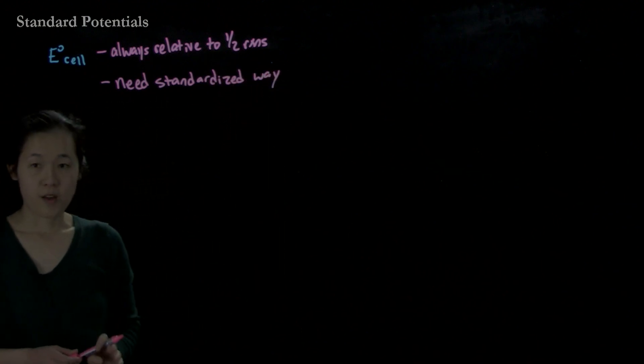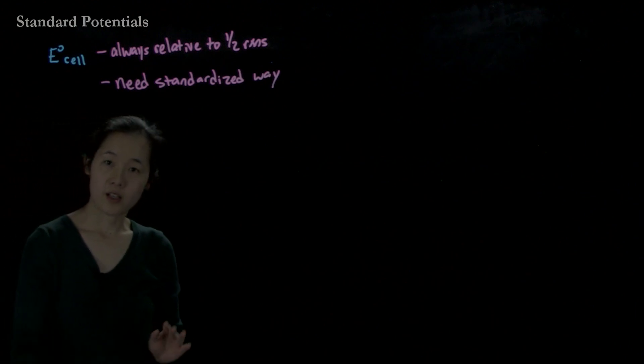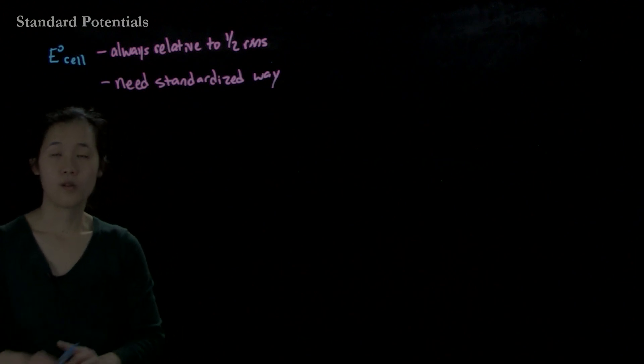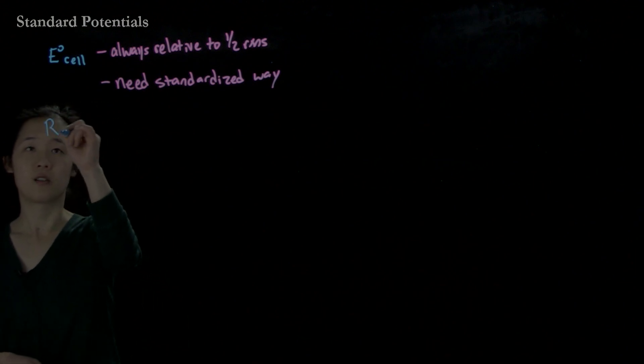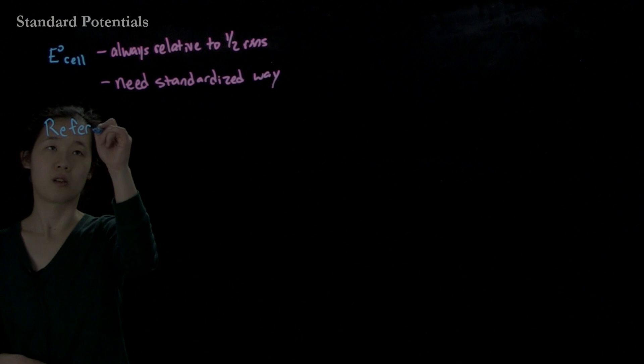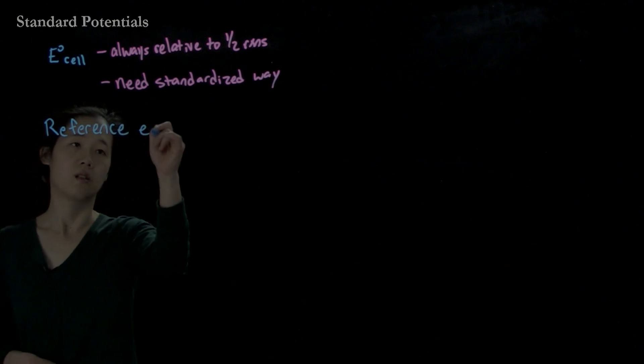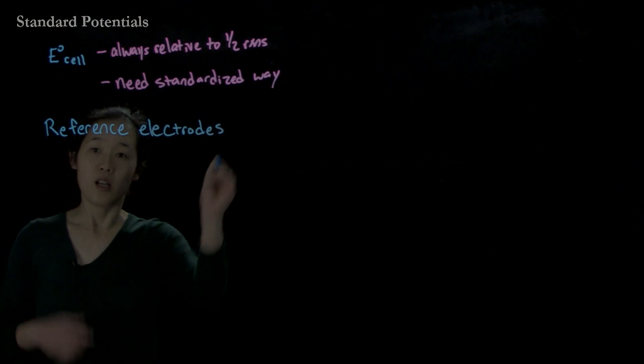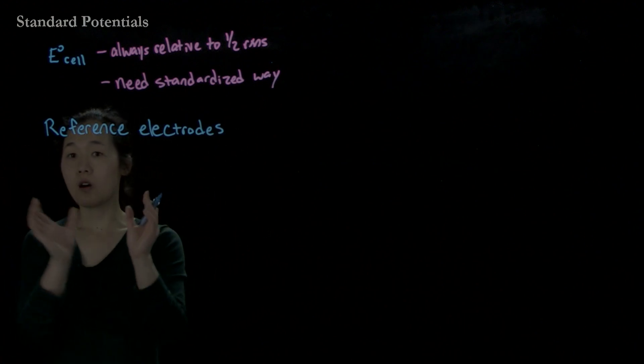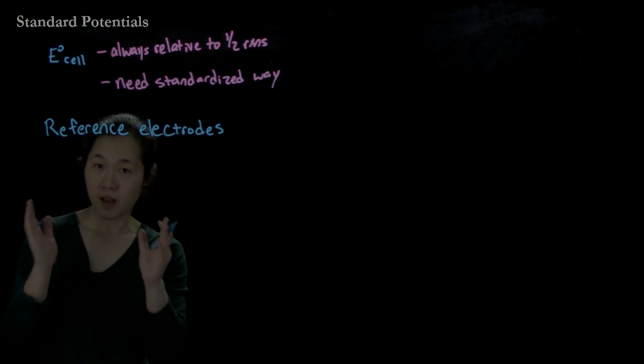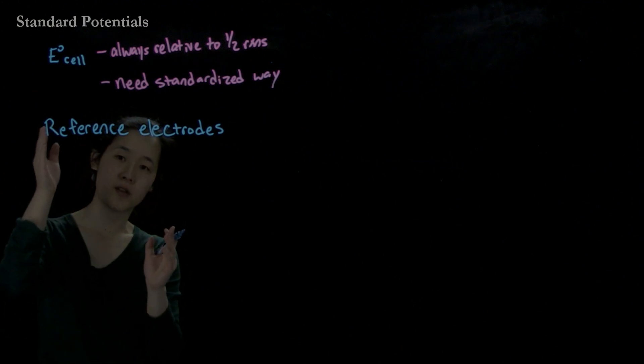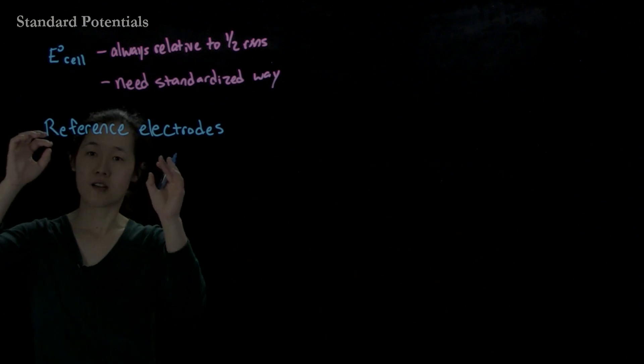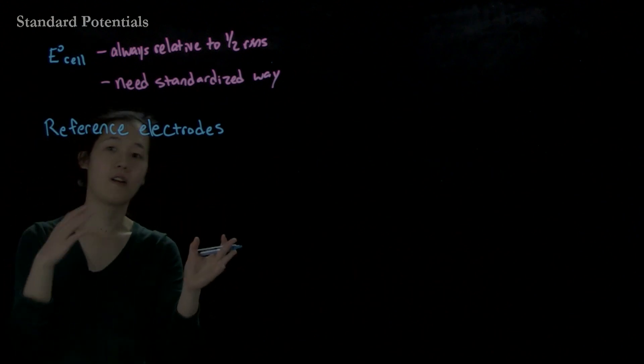So the solution that people found, and by convention what everyone does, is we'll set some standard. We'll use reference electrode. And this will be set to zero. So we'll measure all chemical reactions, all half reactions, versus this reference electrode. And that's how we can measure from the E cell, then we can set that to our final potential of that half reaction.